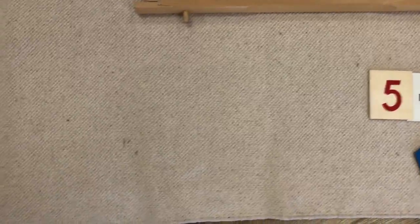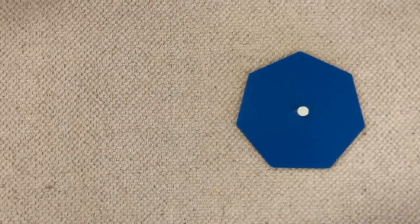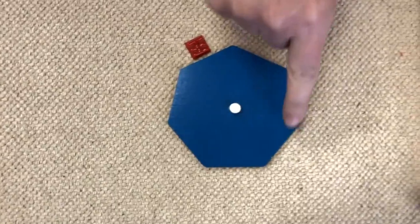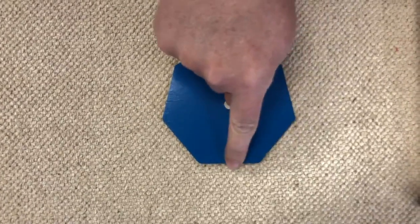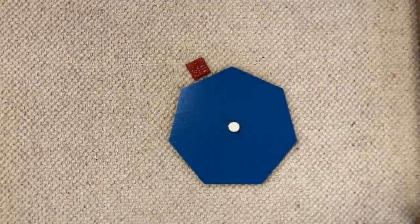Let's look at a different polygon. One, two, three, four, five, six, seven. This is a seven-sided polygon.